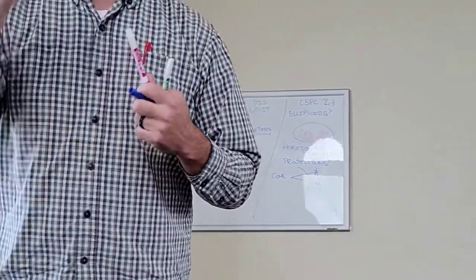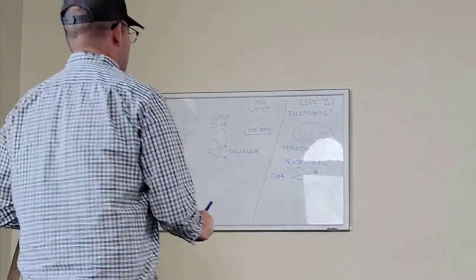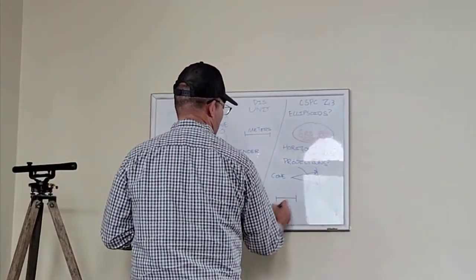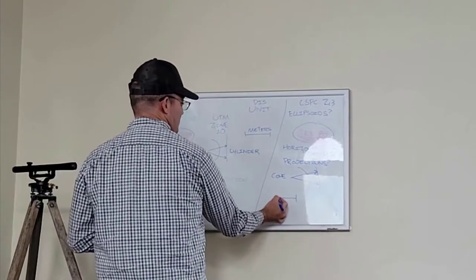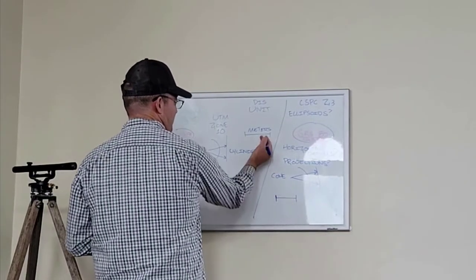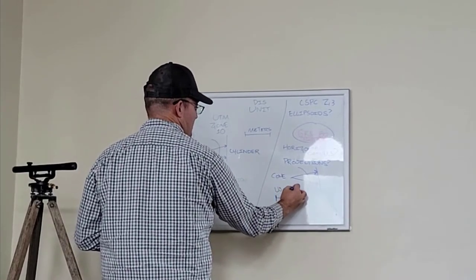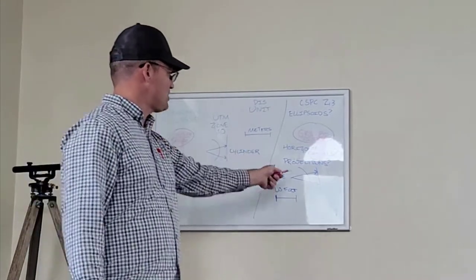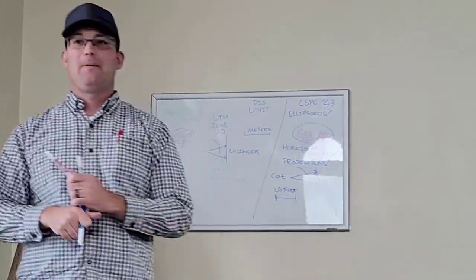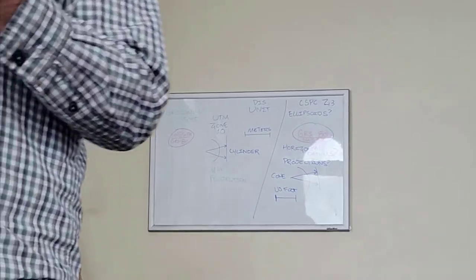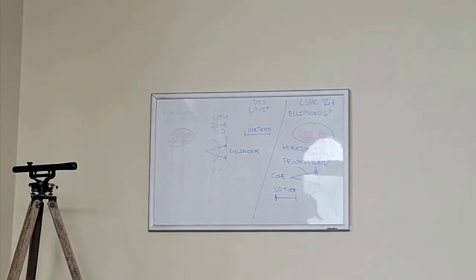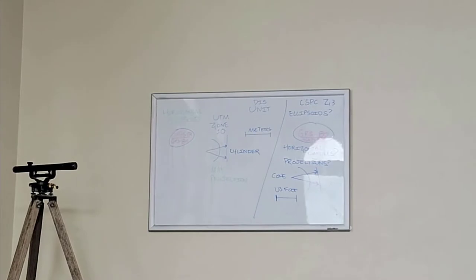There's one more step: what's the distance unit for California State Plane Zone 3? The way we use it — US survey feet. So after changing the projection, it then has to convert from meters to feet. In CAD, we scale the northings and eastings — same concept. So there are four steps to get from UTM Zone 10 to California State Plane Zone 3 NAD-83.